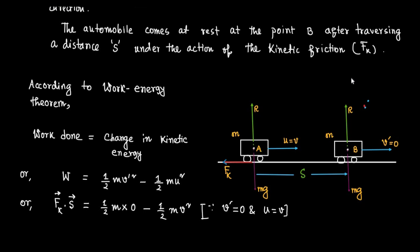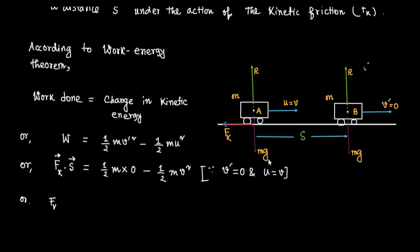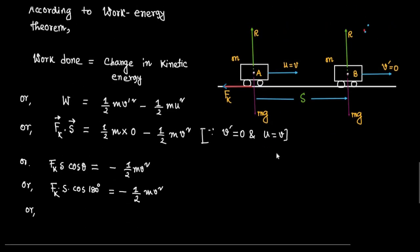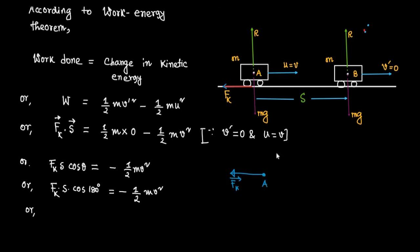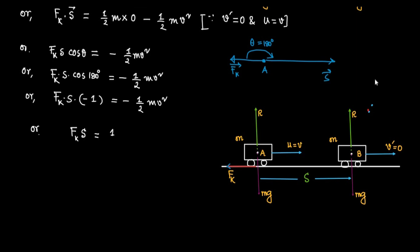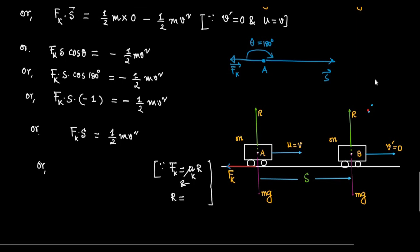So Fk s cos theta equals minus half m v square. Now cos theta becomes cos 180 degrees, which equals minus 1, because kinetic friction acts towards the left and displacement occurs towards the right, so the angle between them is theta equal to 180 degrees. Therefore, minus Fk s equals minus half m v square, or Fk into s equals half m v square.